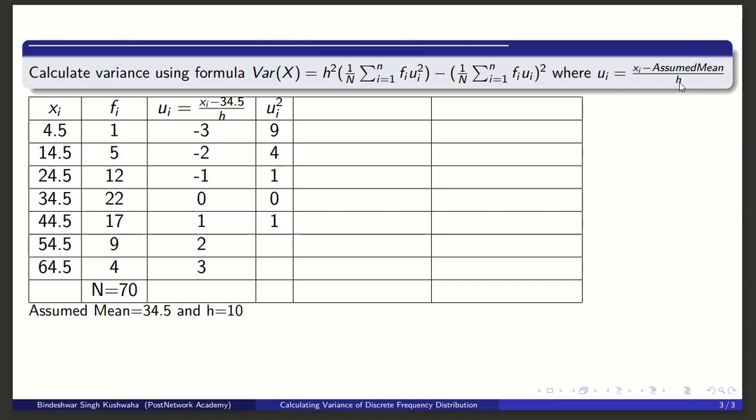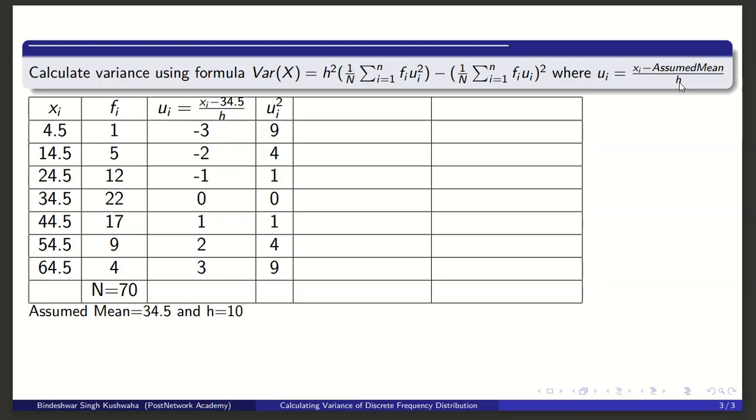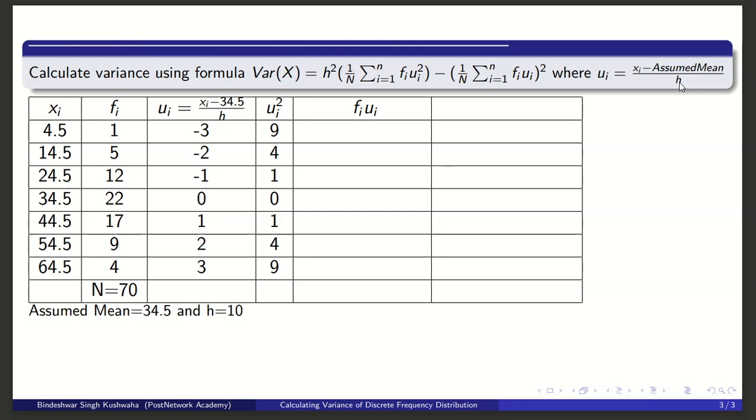So ui² - square of -3 is 9, square of -2 is 4, then 1, 0, 1, 4, and 9.